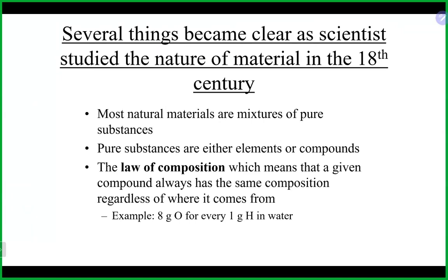By the 18th century, scientists knew that most natural materials are mixtures of pure substances — either elements or compounds. The law of composition states that a compound always has the same composition regardless of where it comes from. For water, you always have about 8 grams of oxygen for every 1 gram of hydrogen — elements always combining in the same whole-number ratios.